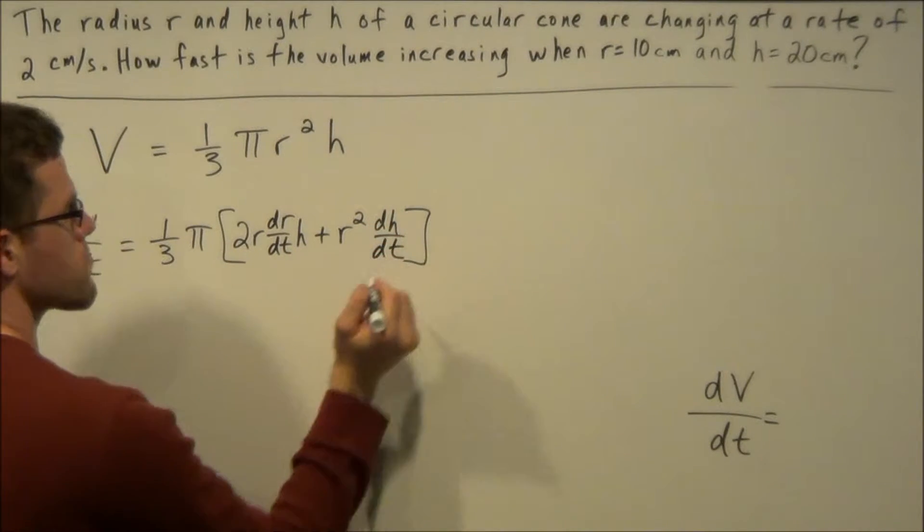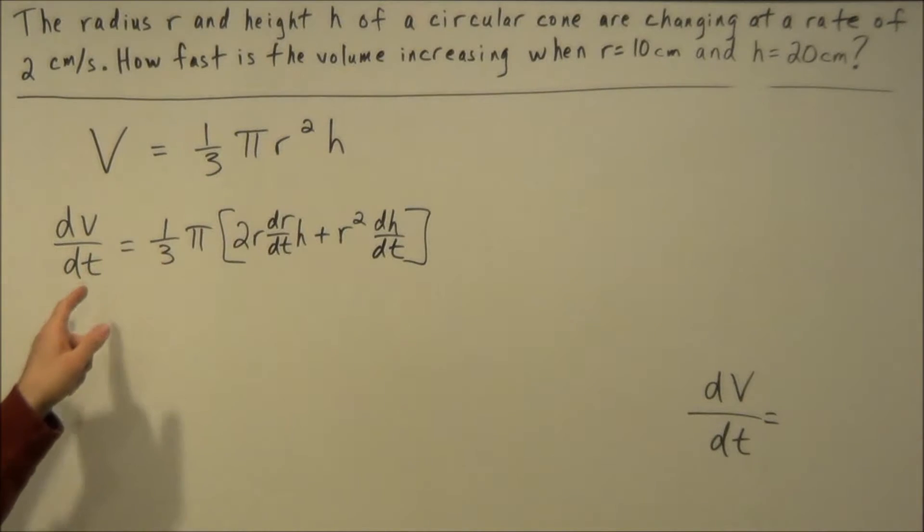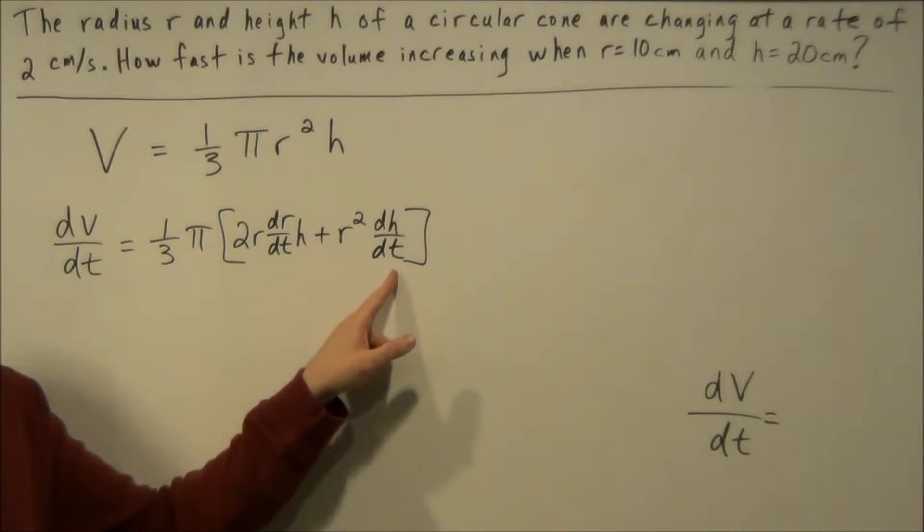So all we're doing is using product rule but remember every time we take the derivative of a variable other than t we have to use chain rule. That's why we have this dr/dt and this dh/dt here.